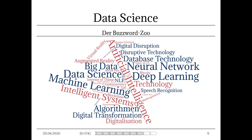Datenbank-Technologie ist einfach nur eine Ansammlung relationaler Daten. Wir haben Big Data – dazu noch einen eigenen Exkurs – bestehend aus strukturierten und unstrukturierten Datenmassen, die mit normalen Mechaniken nicht mehr ausgewertet werden können. Wir haben neuronale Netze, Deep Learning, Data Science, Machine Learning und Artificial Intelligence – das werden wir alles im Folgenden noch kennenlernen.